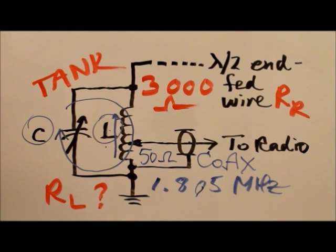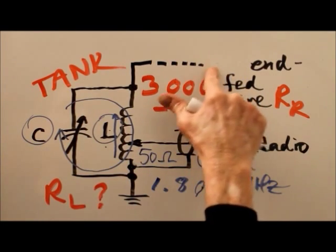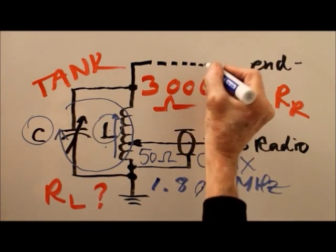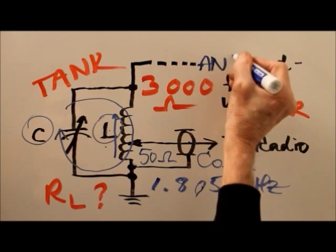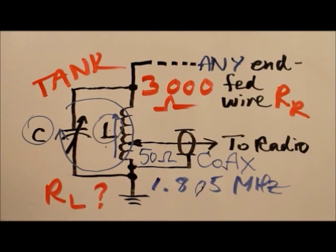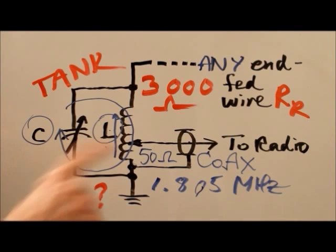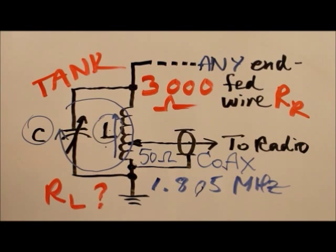But I also found that this thing didn't have to be a half of a wavelength long. It could be any length, from a foot to a mile, from a nanometer to a light year. In fact, this thing would even tune to a one-to-one SWR, with nothing at all connected to the top of it.